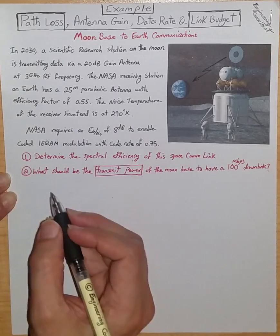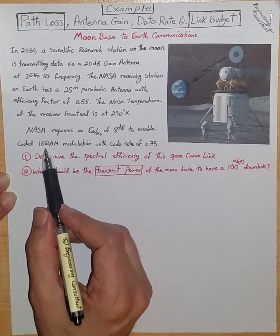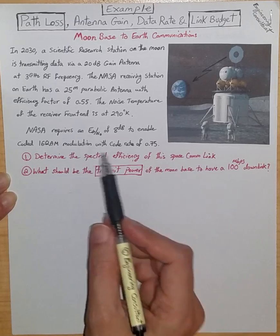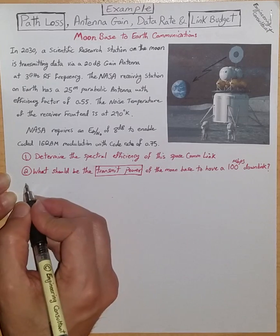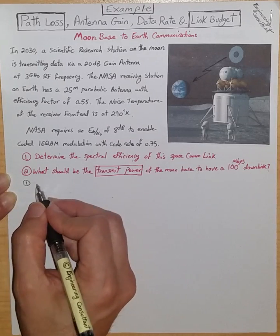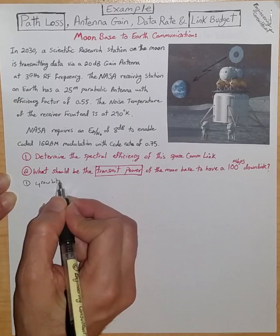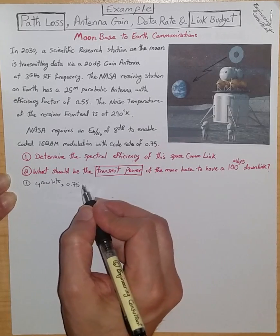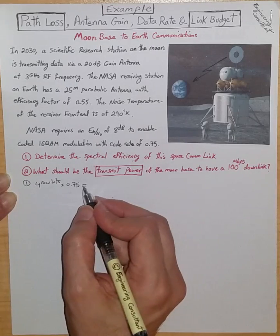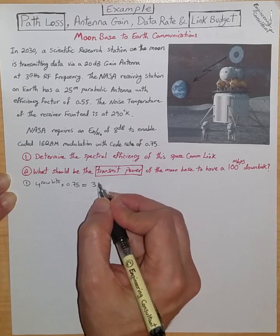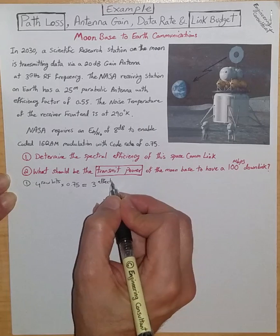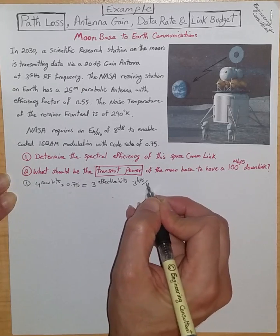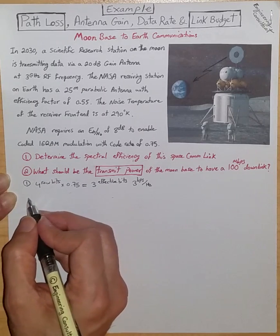For the first question, we have a 16-QAM communication. The raw number of bits on a 16-QAM symbol are 4 bits. This is a coded modulation with a code rate of 0.75. For part 1, we have 4 raw bits times 0.75, which is the code rate. It means 1 out of every 4 bits is consumed for coding purposes effectively, leaving 3 effective bits, or alternatively 3 bits per second per hertz. That is the spectral efficiency of this communication link.